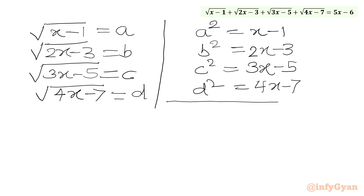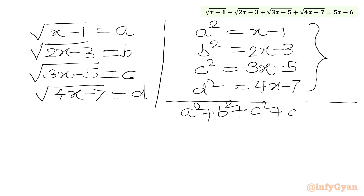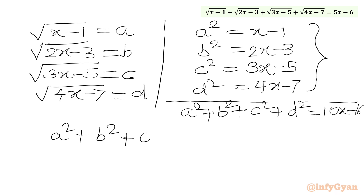Now we add all four squared equations. So a² plus b² plus c² plus d² equals (x plus 2x plus 3x plus 4x) minus (1 plus 3 plus 5 plus 7), which gives us 10x minus 16. We can rewrite the right-hand side, 10x minus 16, in terms of (5x minus 6): it equals 2 times (5x minus 6) minus 4.